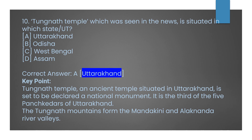The last question: the Tunganath Temple, which was seen in the news recently, is situated in which state or union territory? Option A: Uttarakhand. Option B: Odisha. Option C: West Bengal. Option D: Assam. The correct answer is Option A, Uttarakhand. Tunganath Temple is an ancient temple situated in Uttarakhand and is said to be declared a national monument. It is the third of the five Panch Kedars of Uttarakhand, and the Tunganath mountains form the Mandakini and Alaknanda river valleys.